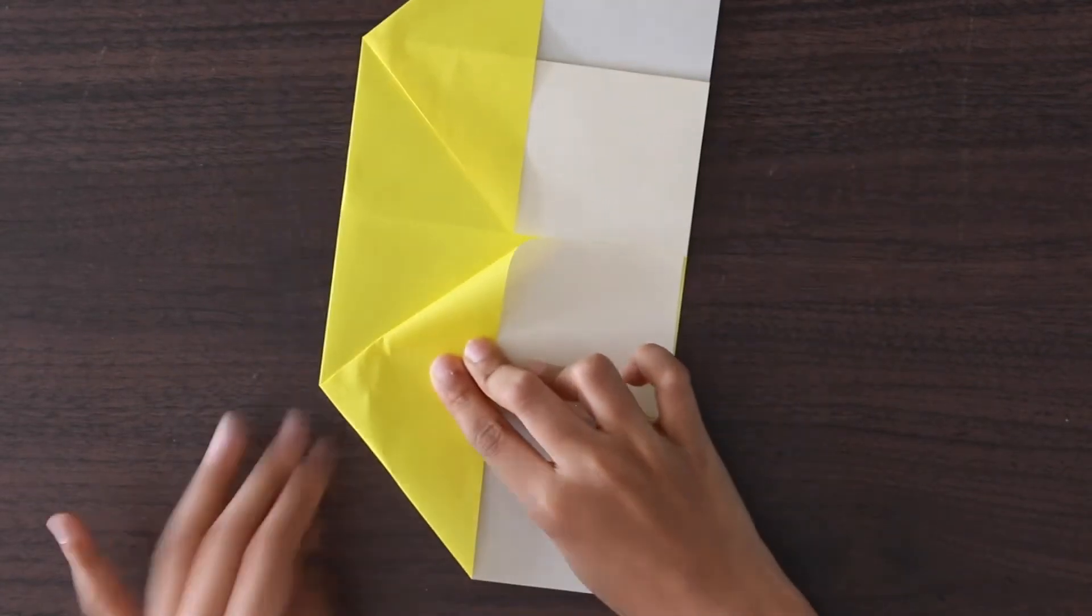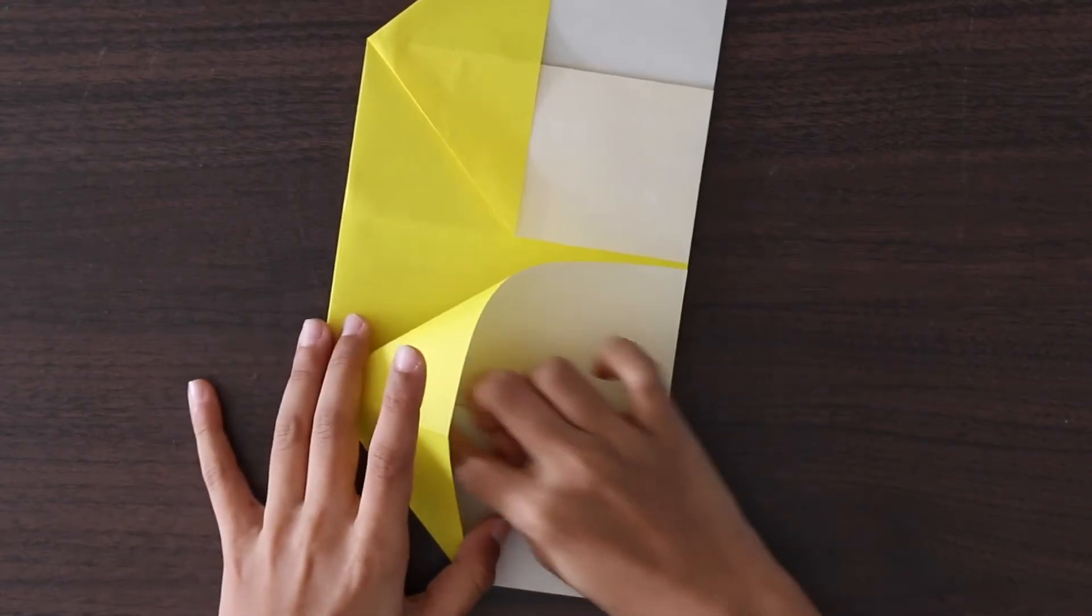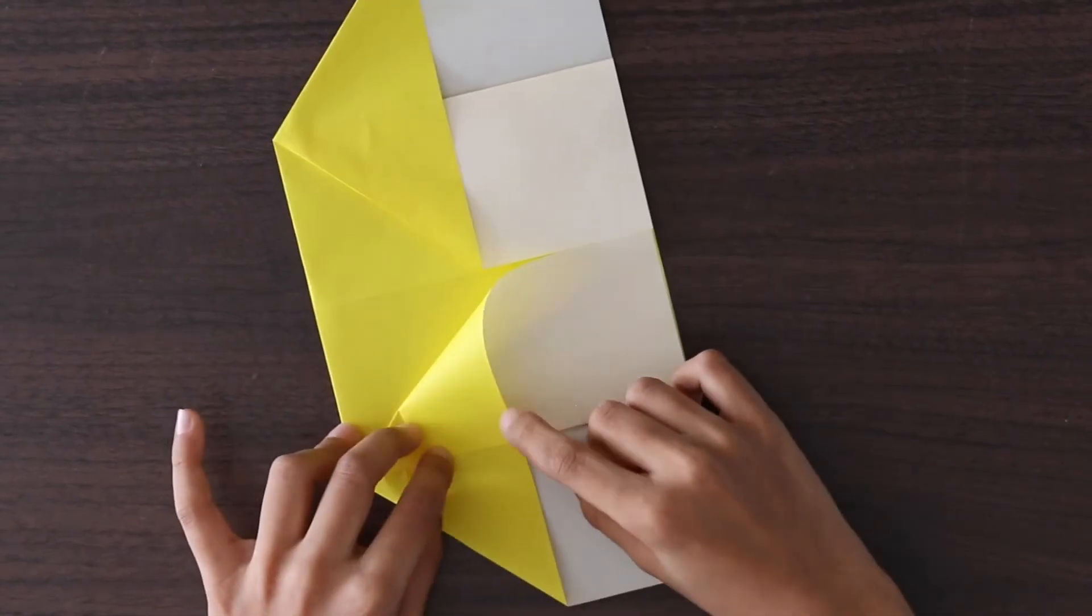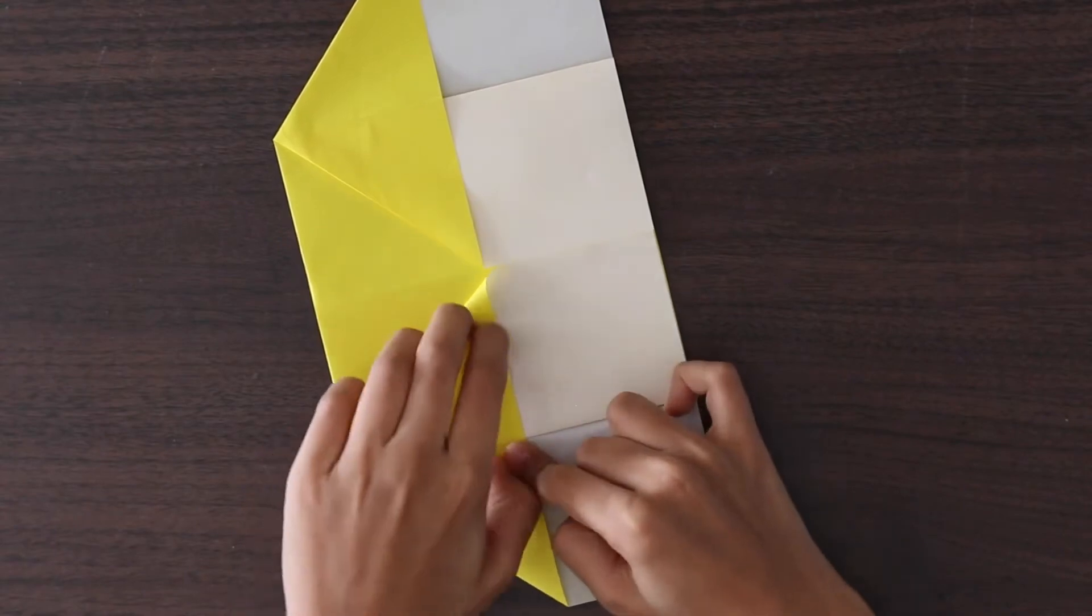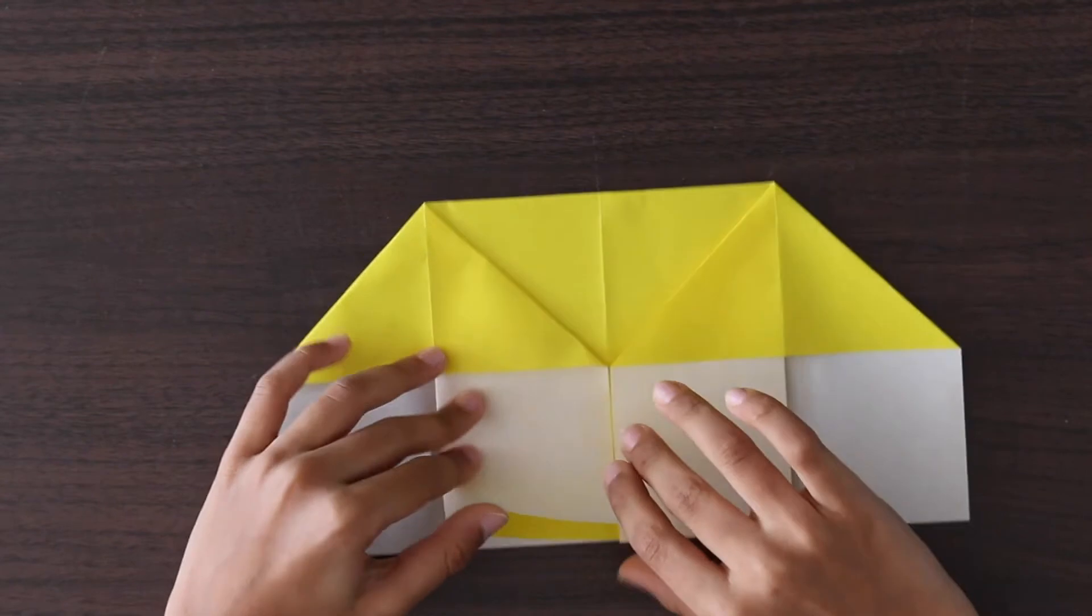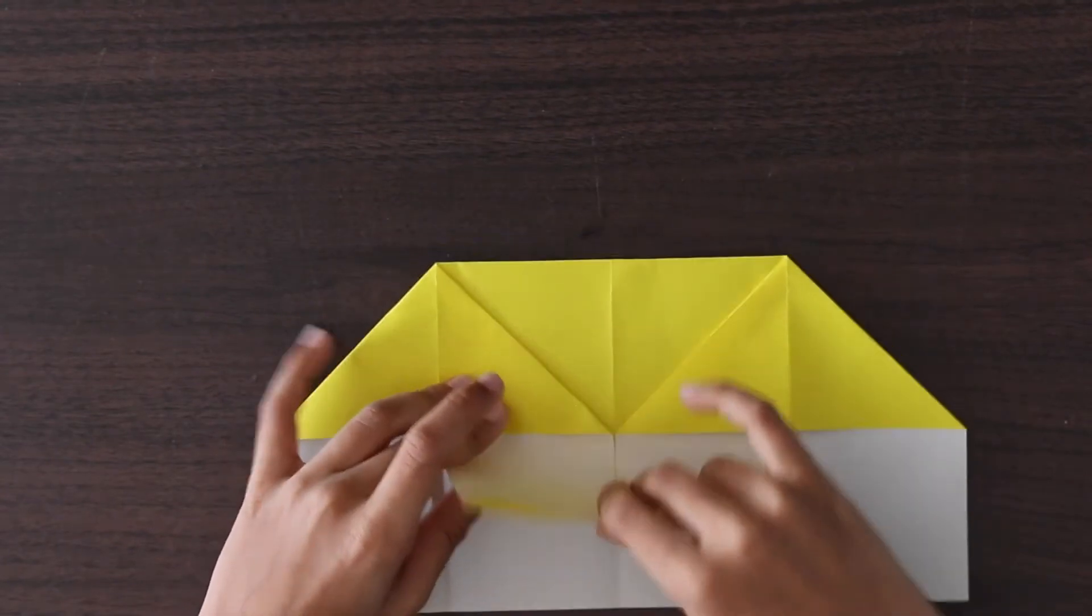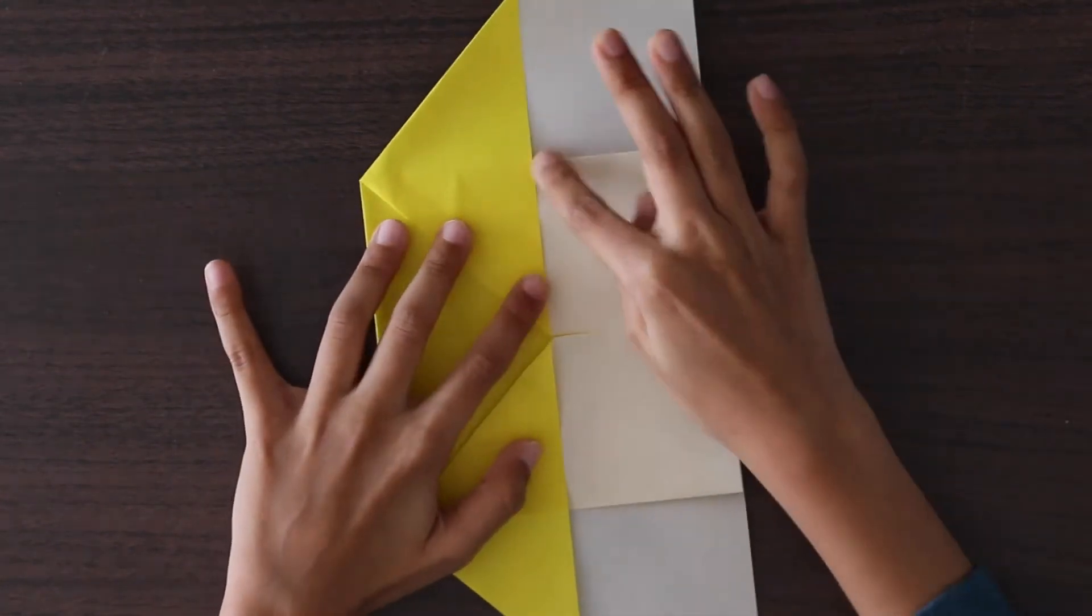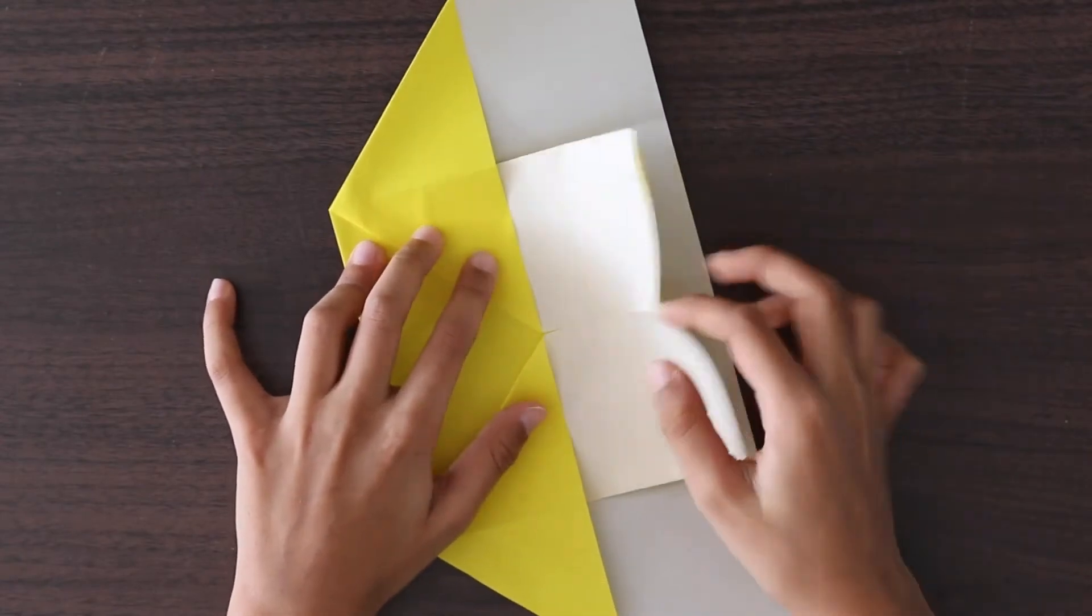If you have trouble squashing it, then you can just use a pencil too. Take it to the side. Rotate. And fold this up over this small edge.